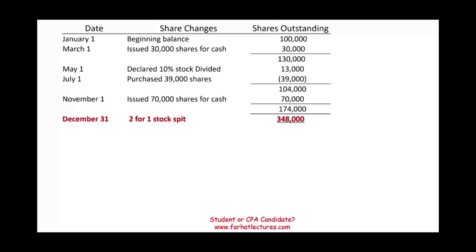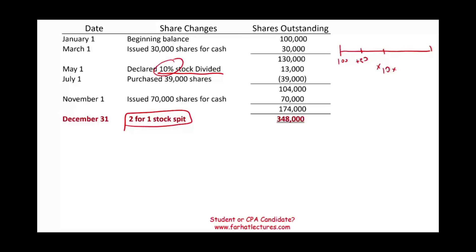Now let's move to a more complicated scenario. We're going to include a stock dividend — where the company declared a stock dividend throughout the year — and a stock split at the end of the year. How do we compute the weighted average number of shares if we have a stock dividend and a stock split? We started with 100,000 shares, then added 30,000. On May 1st, we increased the shares by 10%. Then we purchased 39,000 shares, then issued 70,000, then did a stock split.